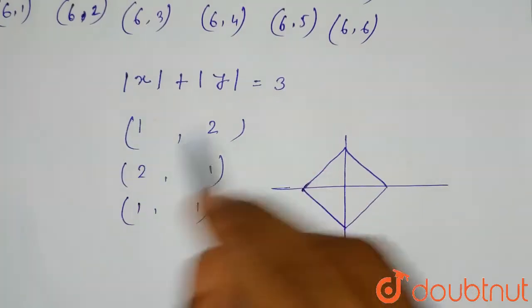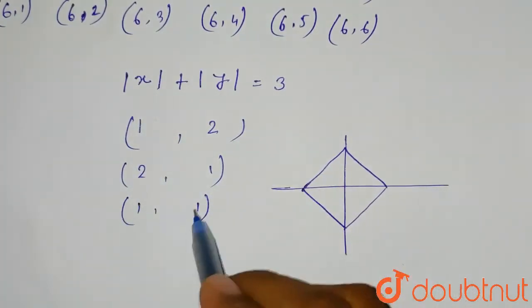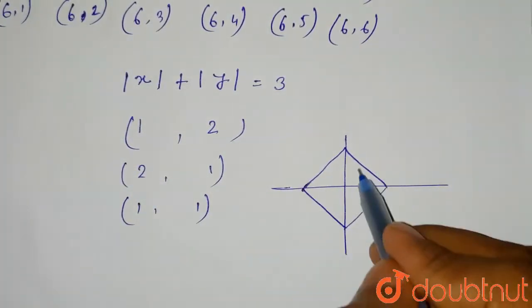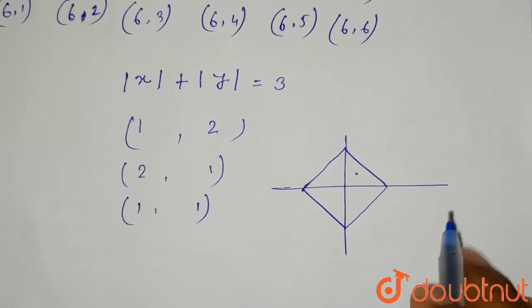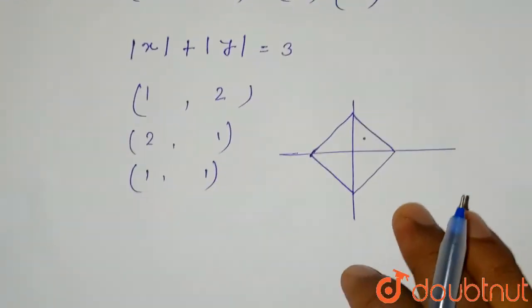Now if we put the values, these two values are satisfying the equation, and this value will be inside the curve somewhere like this. So we have got three favorable outcomes.